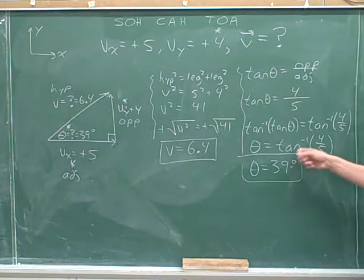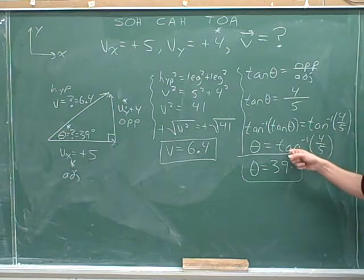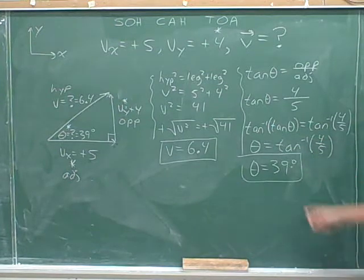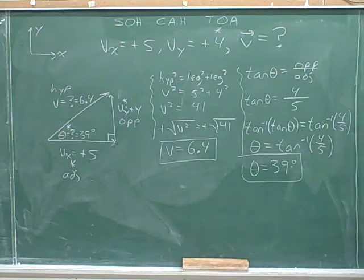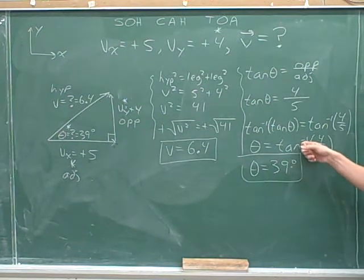Remember here, we're not taking the tangent of 4 fifths. We're taking the inverse tangent of 4 fifths. This could also be called the arc tangent of 4 fifths. Remember, this negative one is not an exponent. It just means inverse tangent.